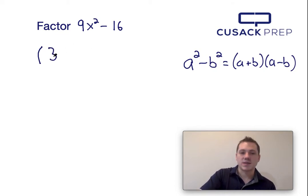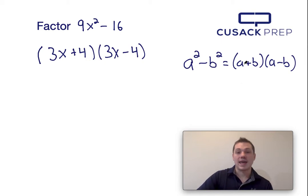So I determined that 9x squared minus 16 can be factored into 3x plus 4 times 3x minus 4 by plugging in the values for a and b, 3x and 4, into the right-hand side of this equation.